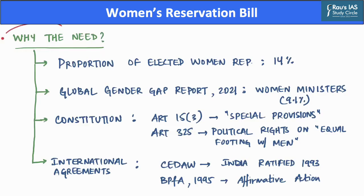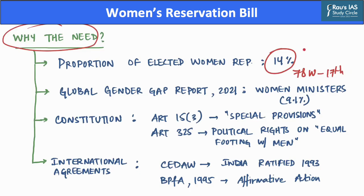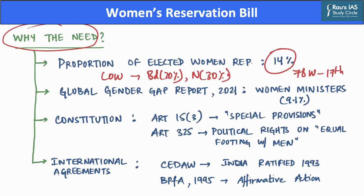Why is there a need to bring reservation for women in the legislature? India ranks in the bottom quarter among UN member nations in terms of proportion of elected women representatives in Parliament. There are 78 women MPs in the 17th Lok Sabha, which comes to around 14% of total strength. While the percentage of women MPs has increased over the years, it is still low compared to other countries. For example, Bangladesh sees around 20% women legislators, whereas Nepal has 30% women members of Parliament.